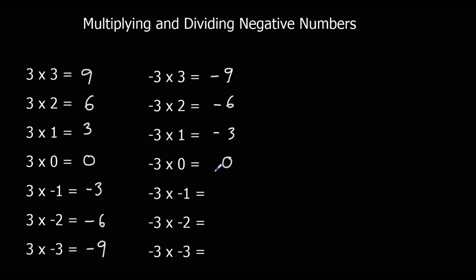So if we keep following the pattern, this must go 3, 6, 9. And what that's telling us is a minus times a minus makes a plus. So a negative times a negative makes a positive.